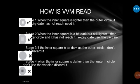Stage four — when the inner square is darker than the outer circle, do not use this vaccine; discard it. In stage four, the square inside the circle appears very dark or black. This vaccine is completely damaged.